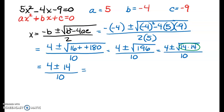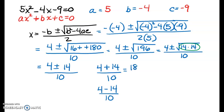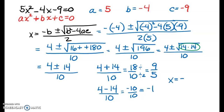I'm going to set up two different answers: 4 plus 14 over 10, and 4 minus 14 over 10. So 4 plus 14 is 18 over 10, and since both numbers are divisible by 2, I get 9 over 5 for one answer. And 4 minus 14 is negative 10 over 10, which is just negative 1. So I have two solutions: negative 1 and 9 fifths.